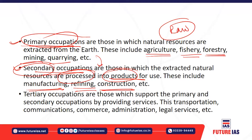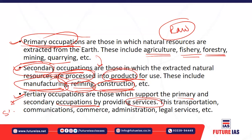Secondary occupations include manufacturing, refining, and construction. Tertiary occupations support the primary and secondary sectors by providing services — such as transportation, communications, commerce, administration, and legal services. All types of services are involved in the tertiary sector, which forms the occupational structure.